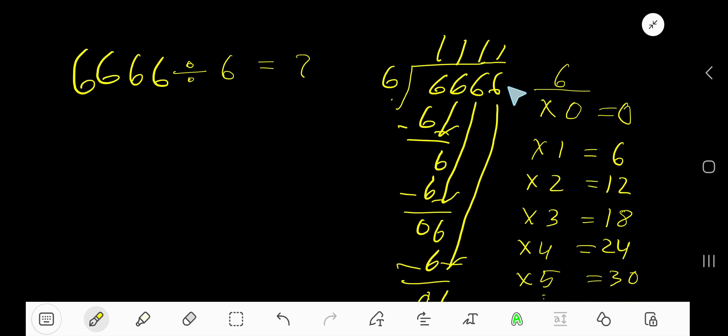As our remainder is 0 and there is no digit here, so we are done. Our answer is 1111.